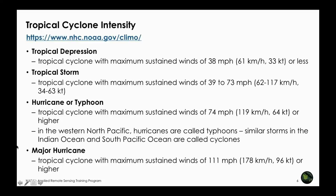Starting with a review of session one: we talked about different storm intensities — tropical depression, tropical storm, typhoon, and major hurricanes. They are all defined based on wind speed, from about 61 kilometers per hour for a depression all the way to 178 kilometers per hour for a major hurricane. When you go to the National Hurricane Center, Joint Typhoon Warning Center, or Pacific Hurricane Center, you would see warnings or watches listing depression, storm, typhoon, or hurricane, so you know the strength of the storm.